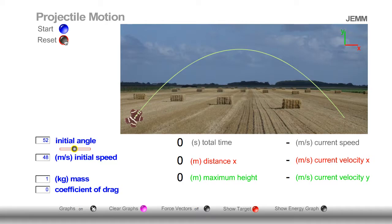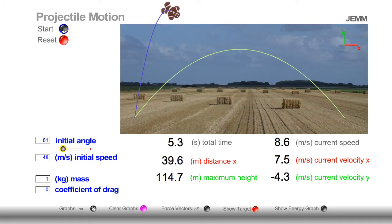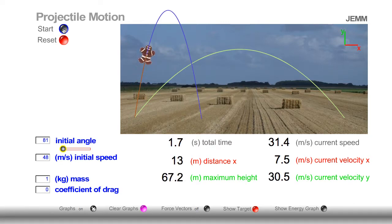This will be easier to see if we use a greater angle. Right around... Now! I'm paying attention to current velocity in the X direction. Notice that, again, X direction velocity does not change. And at peak height, the Y velocity is zero. Keep this in mind today.